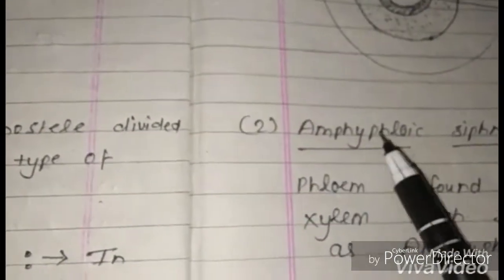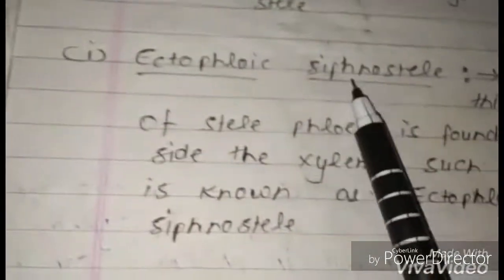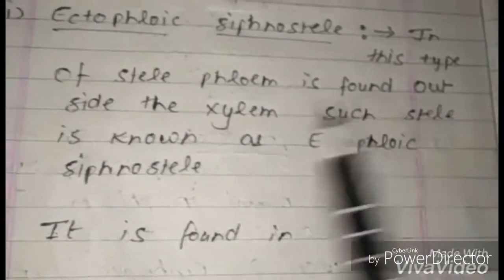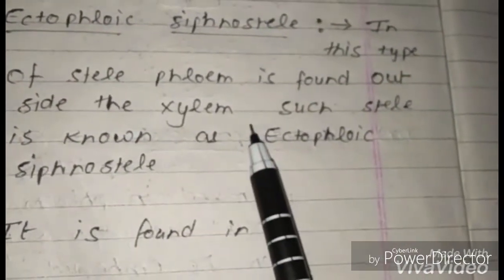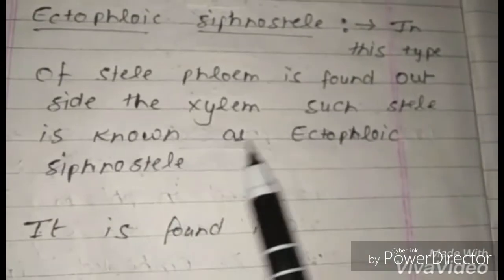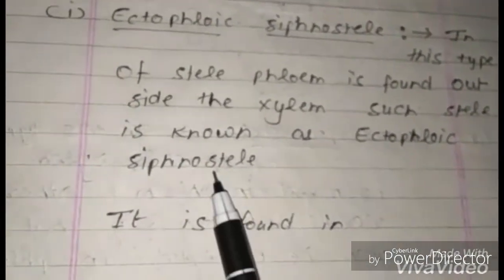Siphonostele is divided into two types: ectophloic siphonostele and amphiphloic siphonostele. In ectophloic siphonostele, phloem is found only outside the xylem. Here is the figure of ectophloic siphonostele.